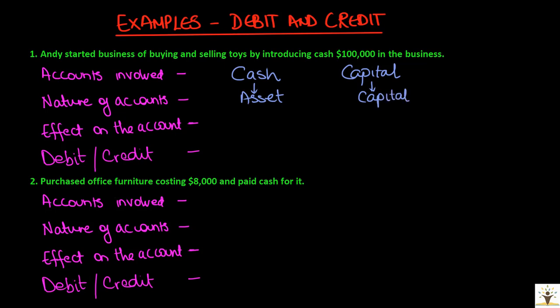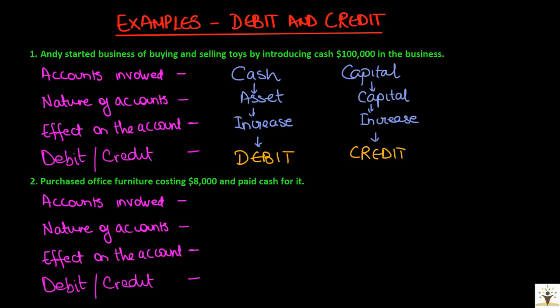Next we analyze the effect of this transaction on these accounts. Because of this transaction, business cash is increasing, so we write increase under cash. And because of this transaction, owner's capital is also increasing in the business. Applying the rules of debit and credit: when an asset increases in the business, it is debited — so cash will be debited. And when capital increases in the business, it is credited. So for the first transaction, cash will be debited and capital will be credited.